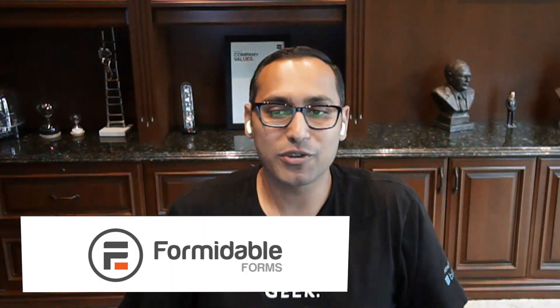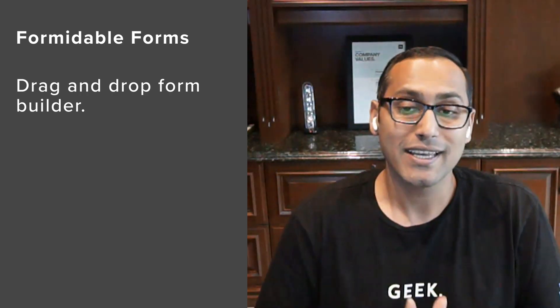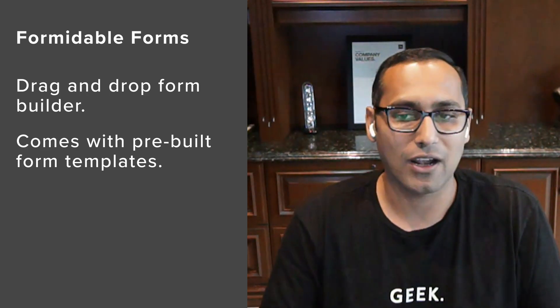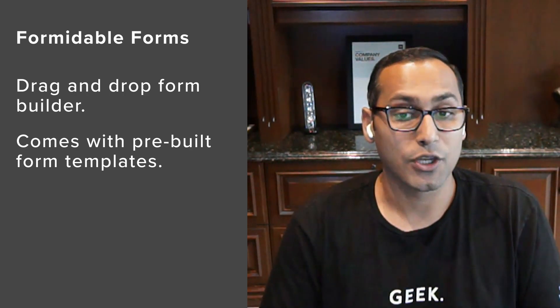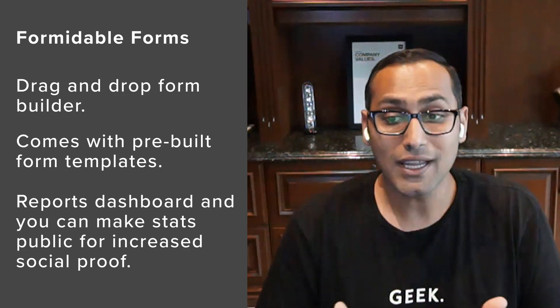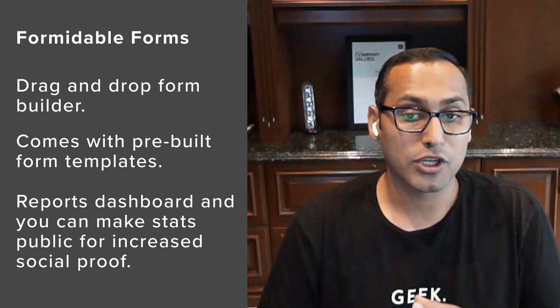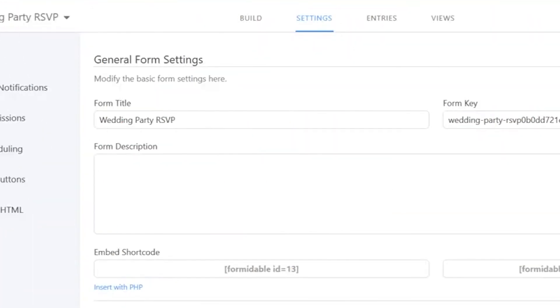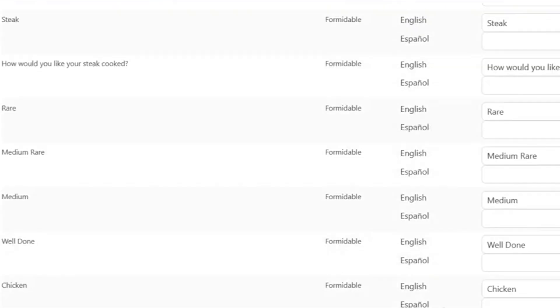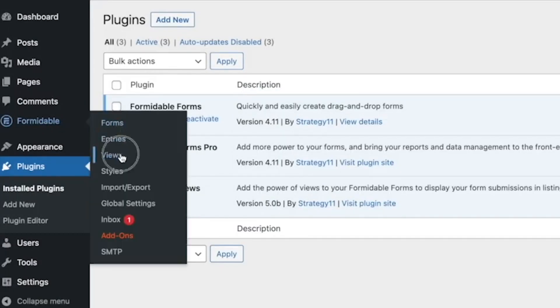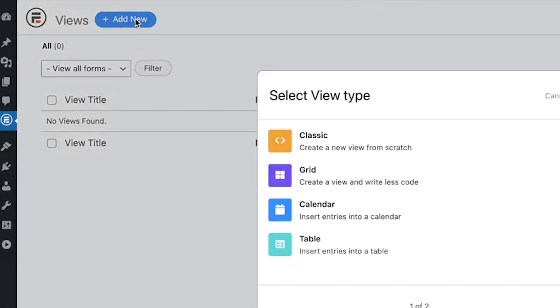Number seven is Formidable Forms. It is the most advanced WordPress form builder plugin, allowing you to create complex forms with a drag-and-drop builder — no code needed. It comes with tons of form templates including a donation form template that lets you collect donations using Stripe, PayPal, Authorize.net, and numerous other payment platforms. You can view donation stats in a graphical chart within your WordPress dashboard and display those stats on the front end using the Formidable Views add-on. It also integrates with the WPML translation plugin so you can translate forms into any language, and the Views add-on lets you display the list of donors on the front end.